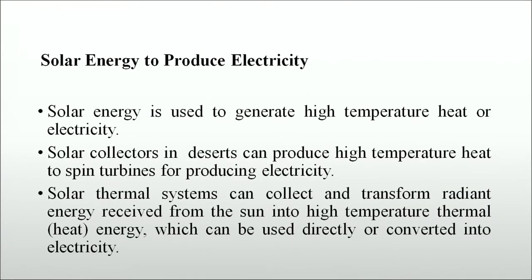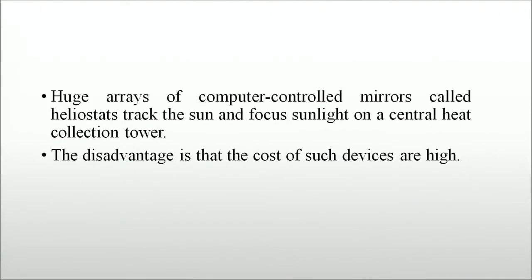Solar energy is used to generate high-temperature heat or electricity. Solar collectors in deserts can produce high-temperature heat to spin turbines for producing electricity. Solar thermal systems can collect and transform radiant energy from the sun into high-temperature thermal energy, which can be used directly or converted into electricity. Huge arrays of computer-controlled mirrors called heliostats track the sun and focus sunlight on a central heat-collecting tower. The disadvantage is that the cost of such devices is high.